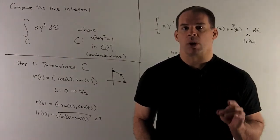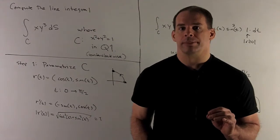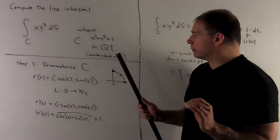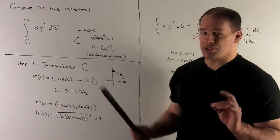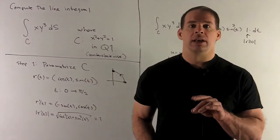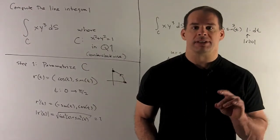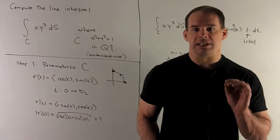Square root gives me a one. So when we go for ds, that's just going to be given by usually the length of r prime times dt, so it's just going to be dt.